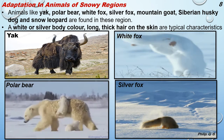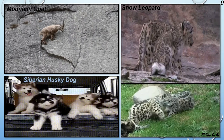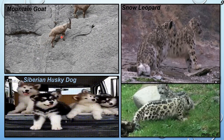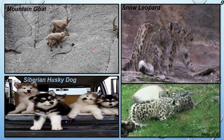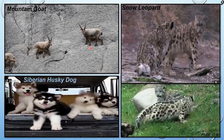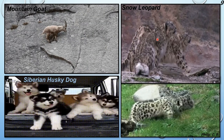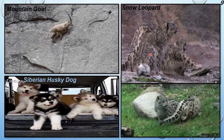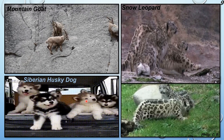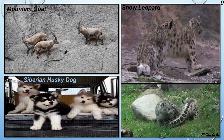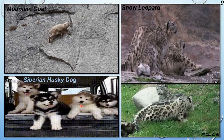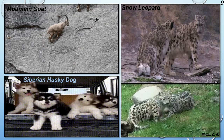A few more images of animals found in snowy regions: mountain goats climbing mountains in a way normal goats cannot, snow leopards with bodies covered in thick fur along with their babies, and the Siberian husky dog. All these dog species - silver dog, white dog, African wild dogs - differ slightly in appearance and shape from one another.